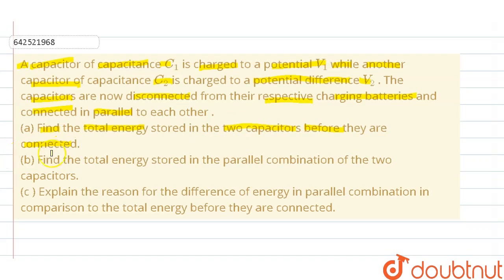Part B: Find the total energy stored in the parallel combination of the two capacitors. Part C: Explain the reason for the difference of energy in parallel combination in comparison to total energy before they are connected.